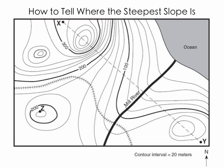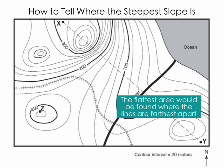Occasionally we'll see a question about where there's the flattest slope. The opposite would be true — the flattest area would be found where the lines are furthest apart. So on this map, probably somewhere in this bottom left area.